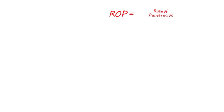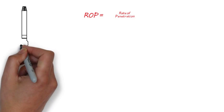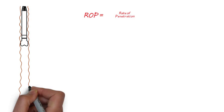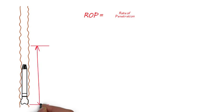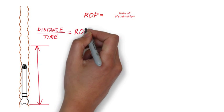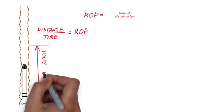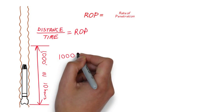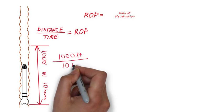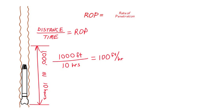ROP stands for rate of penetration, which is basically how fast the bit is drilling the hole. Average ROP is generally measured by taking the total distance drilled divided by the time it took to drill it. For example, if you drill 1,000 feet in 10 hours, 1,000 feet divided by 10 hours is 100 feet per hour, on average.